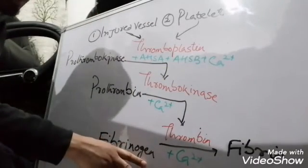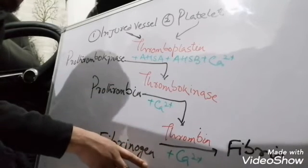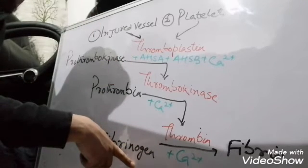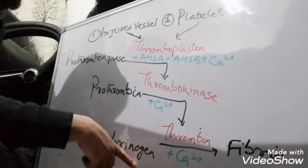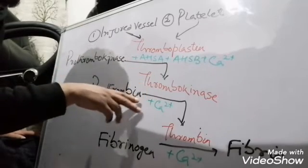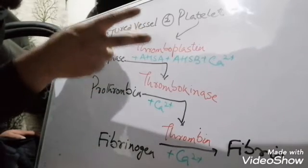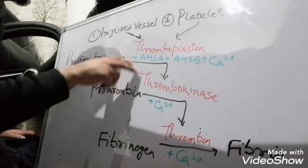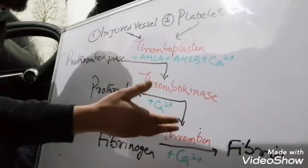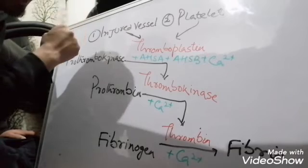This fibrinogen is a clotting factor because it forms fibrin, and we call it clotting factor 1. Prothrombin is also involved in the process of fibrin formation and is considered clotting factor 2. Thromboplastin is also a clotting factor because it is involved in the whole process of fibrin formation, and we call it clotting factor 3.